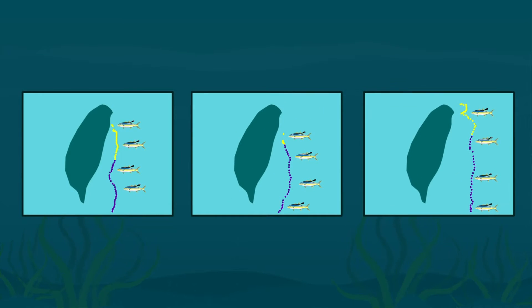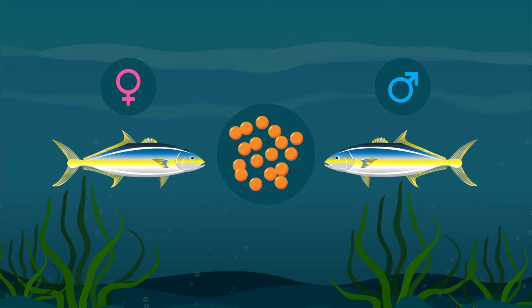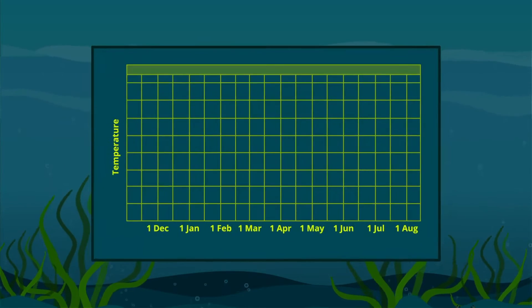This southern migration coincided with colder water in the southern East China Sea and preceded their spawning between February and April.